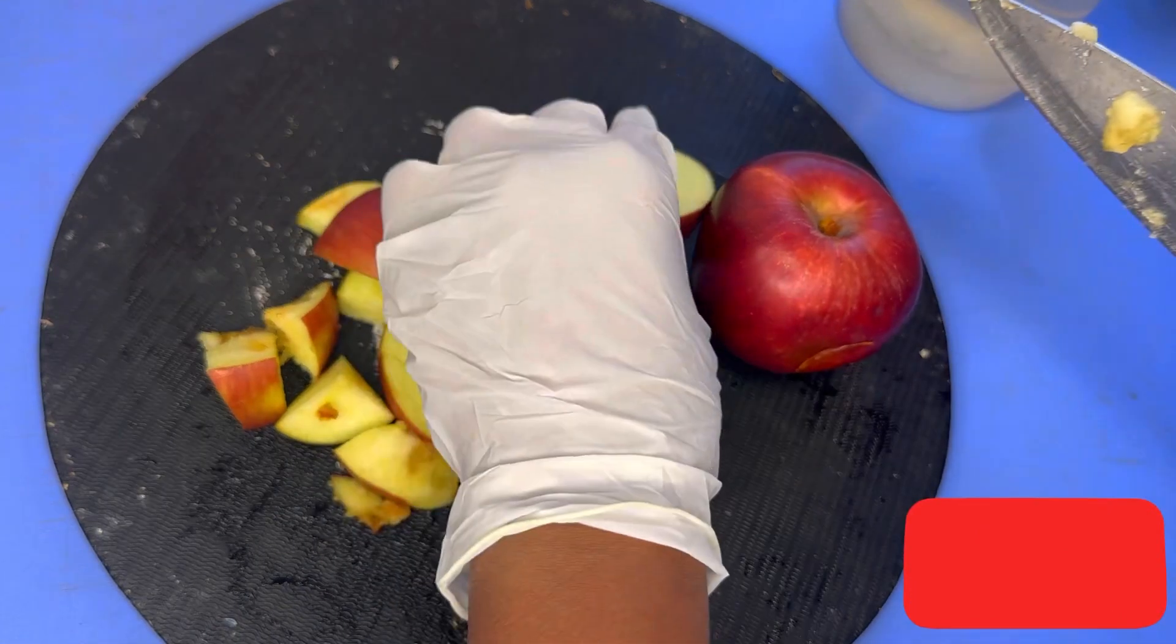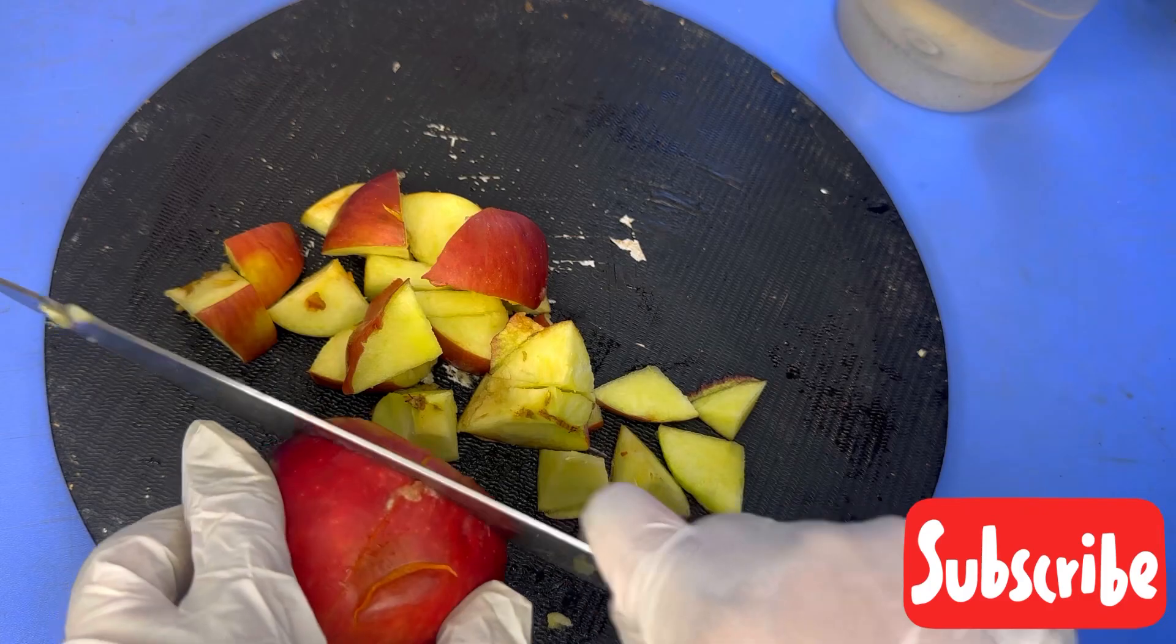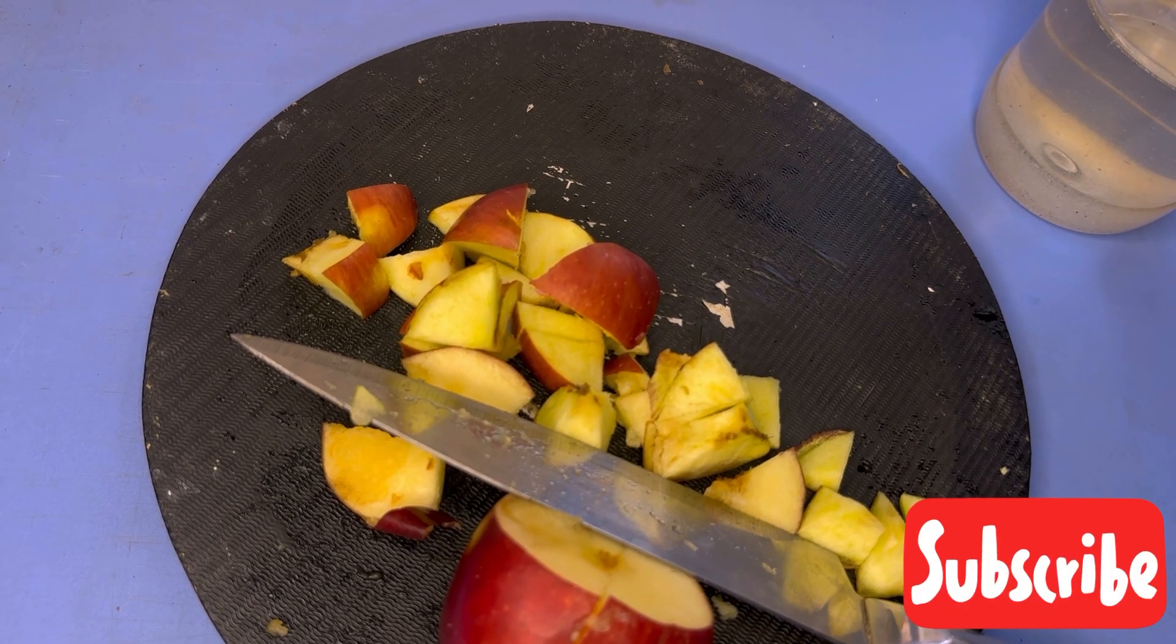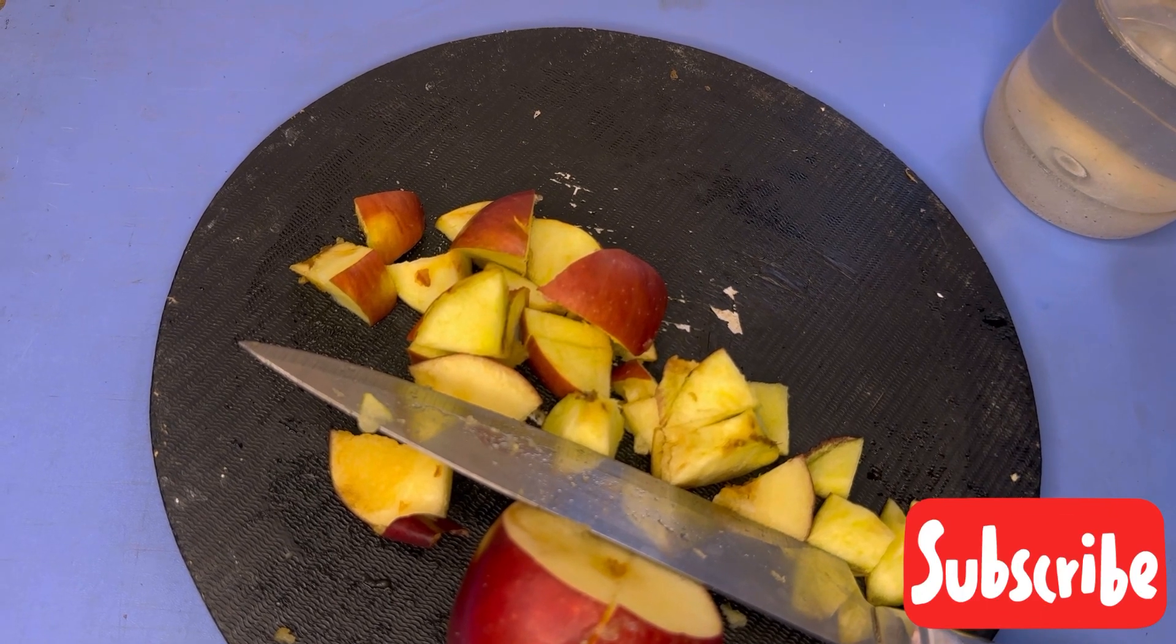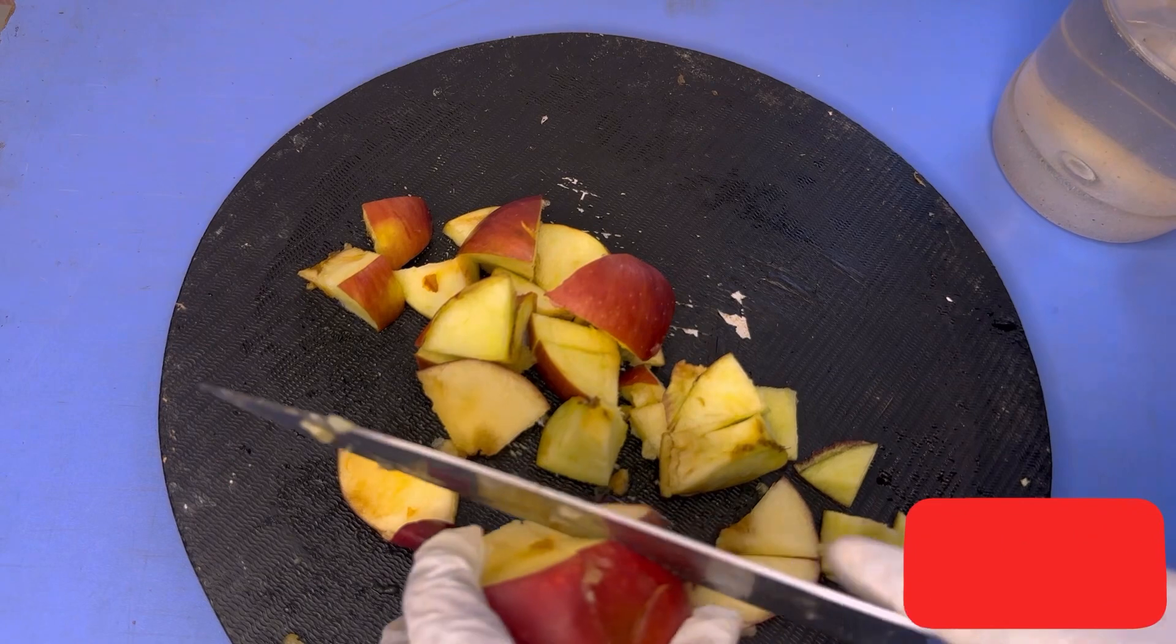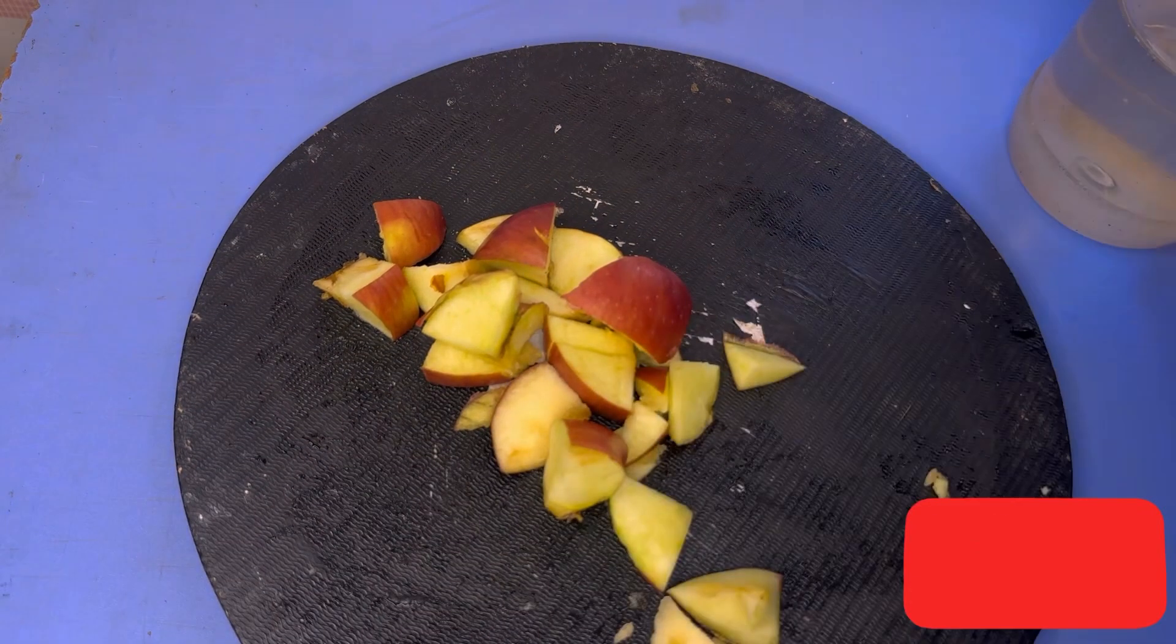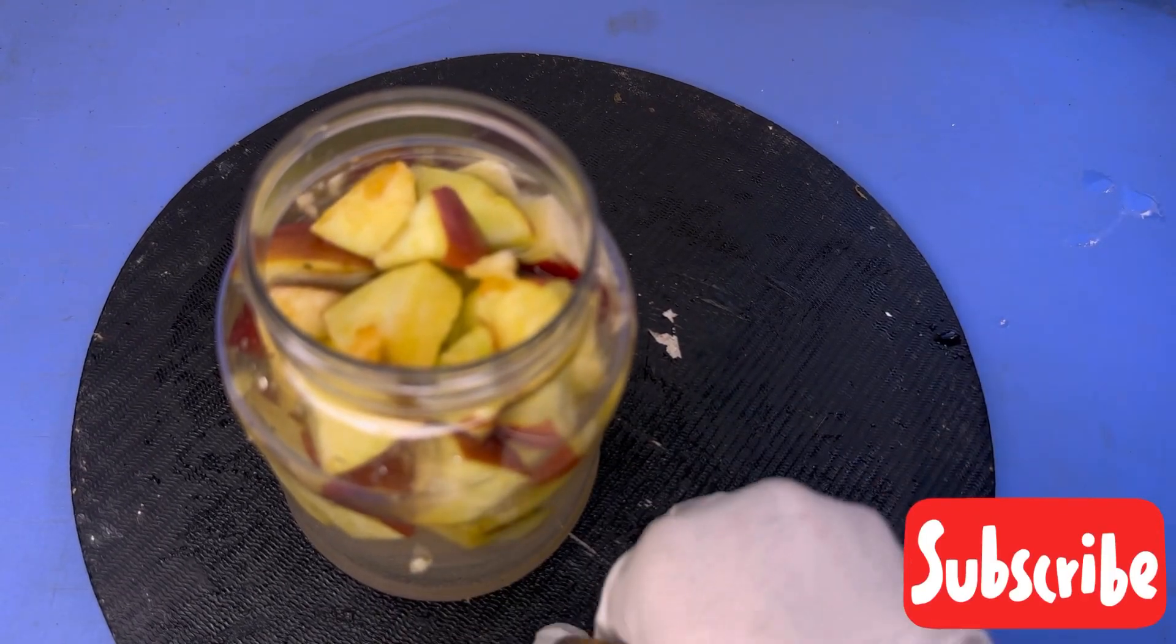During fermentation, the sugar forms what is called carbon dioxide, which also leads to the process of alcohol. When you leave this for about three to five days, you will start perceiving the smell of alcohol. It starts smelling or tasting like alcohol once it starts fermenting. Just pour this in your bottle.